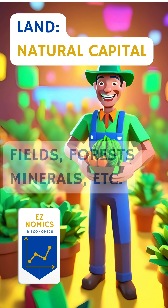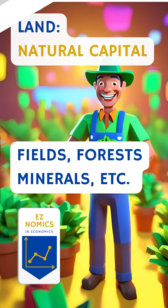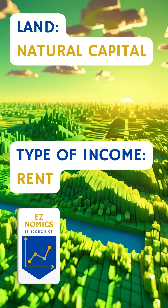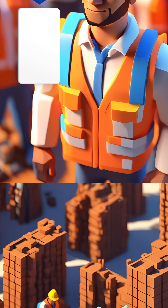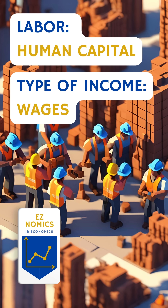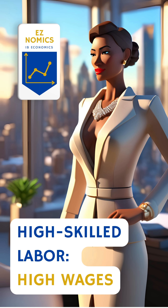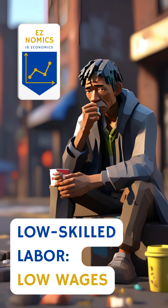Ownership of land resources or natural capital generates a form of income we call rent. Households that offer their labor to firms generate wages — thus high-skilled labor will earn high wages, whereas low-skilled labor will earn low wages.